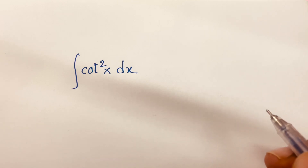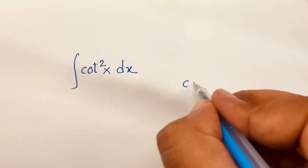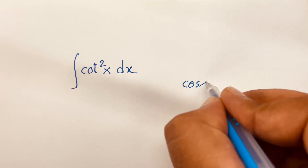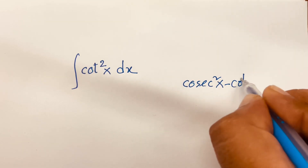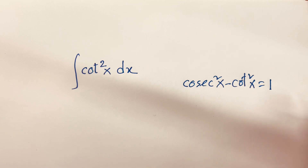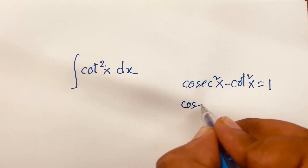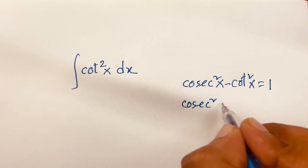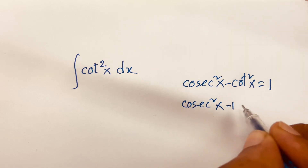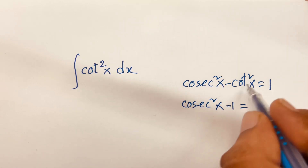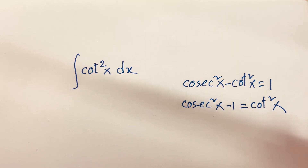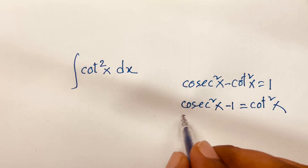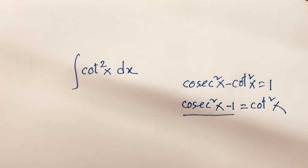We know the trigonometric rule: cosec square x minus cot square x is equal to 1. So I can see easily here is cosec square x, this 1, it will be minus and here is cot square x. So I can see easily, cot square x it will be cosec square x minus 1.